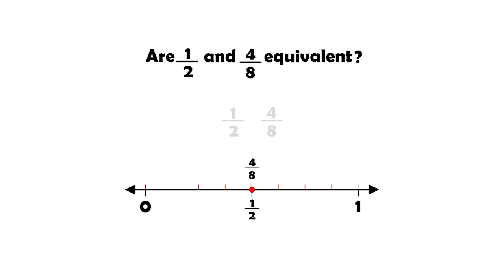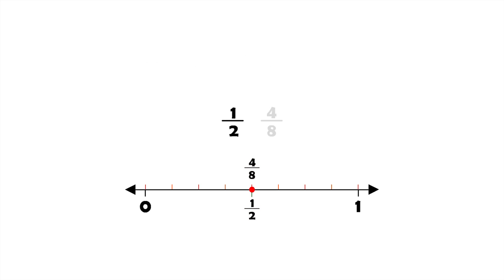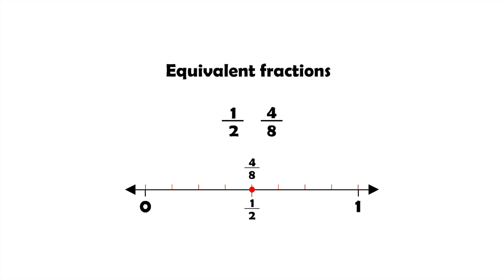Now, look at the number line. What do you see? The top of the number line shows eighths and the bottom of the number line shows halves. Notice that both fractions are located at the same point. In other words, the two fractions one half and four eighths are equivalent fractions. So we can write that one half equals four eighths.